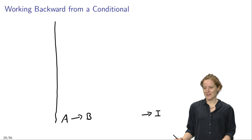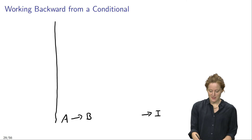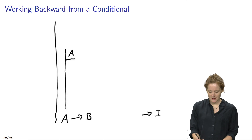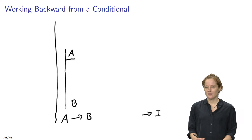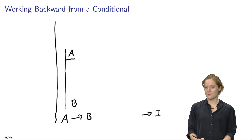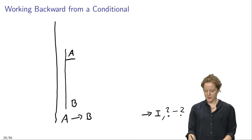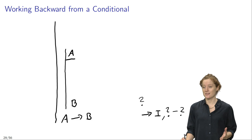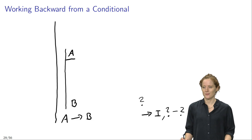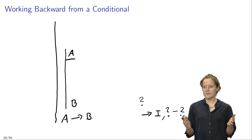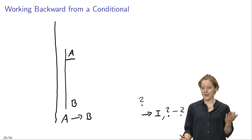In order to apply conditional introduction, I need a sub-proof. So I need to set up a sub-proof that starts with the assumption that A and leads to the conclusion that B. If indeed I manage to prove B, then I can infer 'if A then B' and justify that inference by citing conditional introduction as applied to the sub-proof from line question mark to question mark. I'll also put a question mark behind B to remind myself that I still need to establish it.